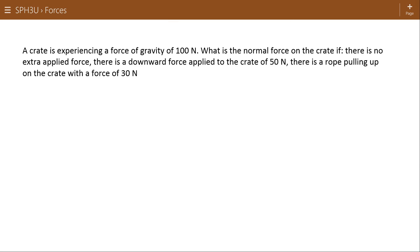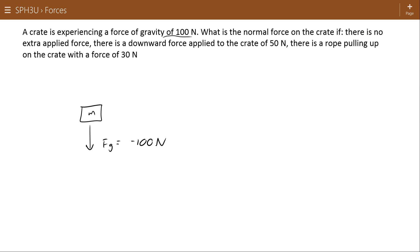A crate is experiencing a force of gravity of 100 Newtons. Here's my crate, here's my 100 Newtons, force of gravity of negative 100 Newtons. In a question like this, they often won't put a negative on that 100 Newtons. It's gravity, we know it should be going down. What is the normal force on the crate if there's no external applied force, if there's a downward force applied to the crate of 50 Newtons, if there's a rope pulling up on the crate of 30 Newtons? Okay, let's divide these up into A, B, and C just to keep everything straight.